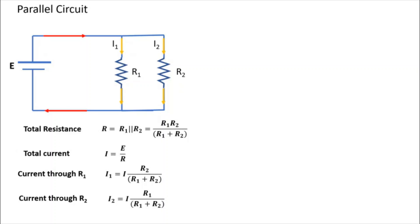Now we have to make a comparison between currents I1 and I2 depending upon resistances R1 and R2. If R2 is more, I1 is more and I2 is less. To show this comparison numerically, we have to take different values of R1, R2, and EMF.